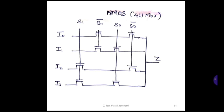As you can see, i0 is routed to z only if s1 bar and s0 bar are both on. All these are n-type pass transistors. To turn on both transistors connected to i0, s1 bar and s0 bar must both be 0, then i0 is routed to z. Similarly, to route i1 to z, s1 bar must be 0 and s0 must be 1. So only one of i0, i1, i2, or i3 is routed towards z based on the select inputs.